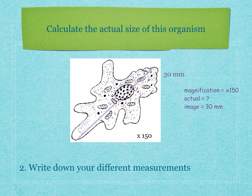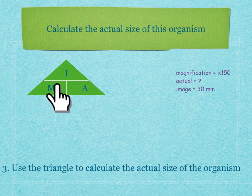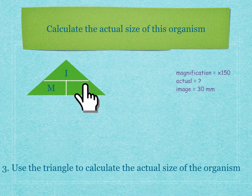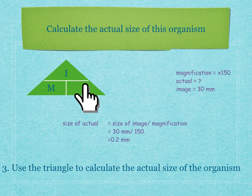So, how do we calculate the actual size of the organism? Draw your triangle — M, I, A — with I always on top. Put your hand over A: actual equals size of image divided by magnification. So, size of actual equals 30 millimeters divided by 150, which equals 0.2 millimeters. The actual size of the organism is 0.2 millimeters in real life. And that concludes our lesson.